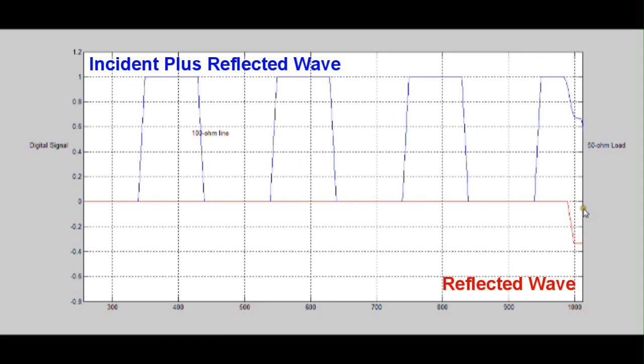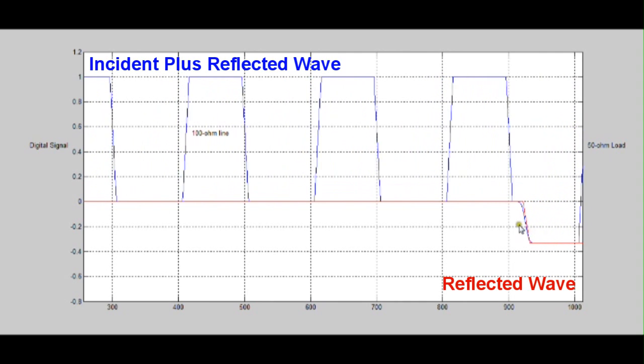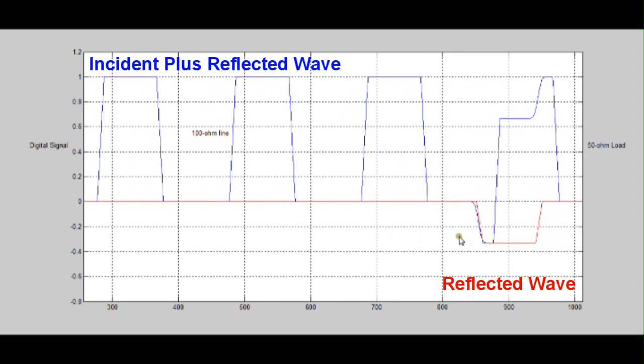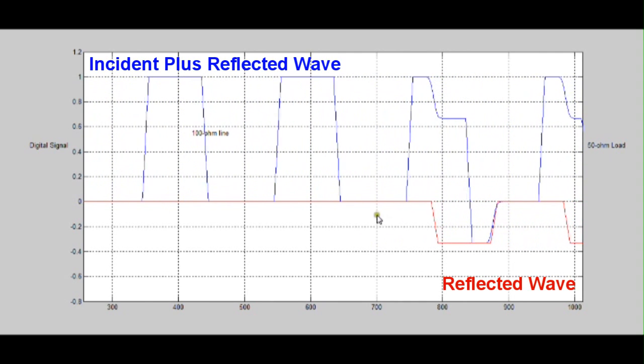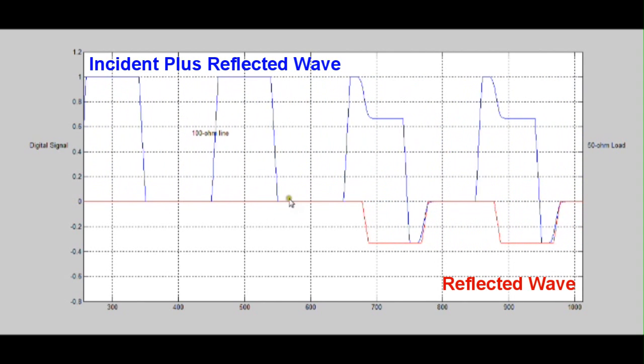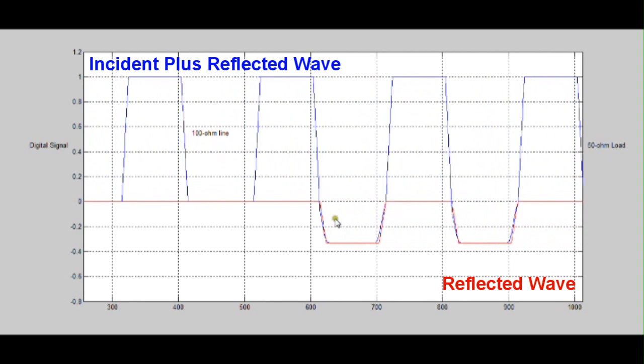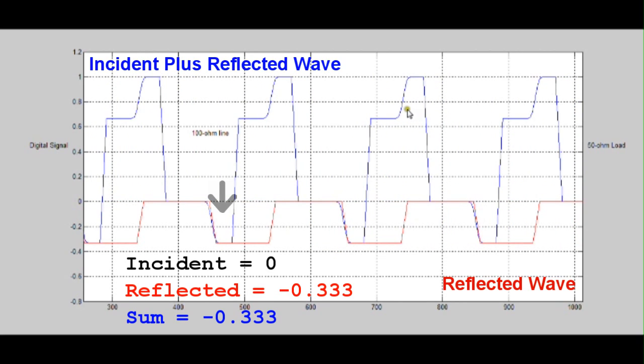So here we have the digital signal coming down the line, and as soon as it hits, I'm going to slow this down. So we have this red reflected wave coming off of the load, it's minus a third of a volt, and wherever we have zero volts for our voltage on the transmission line.